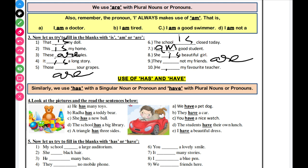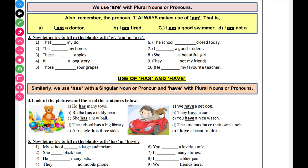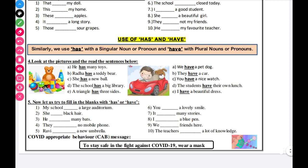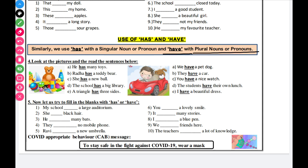So this is how to use is, are, and am. We have completed that section. Now we learn 'has' and 'have'. The rule is the same: 'has' is used with a singular noun or pronoun, and 'have' is used with a plural noun or pronoun. Singular means one; plural means more than one. He, she, it, school — all singular, so we use 'has'.